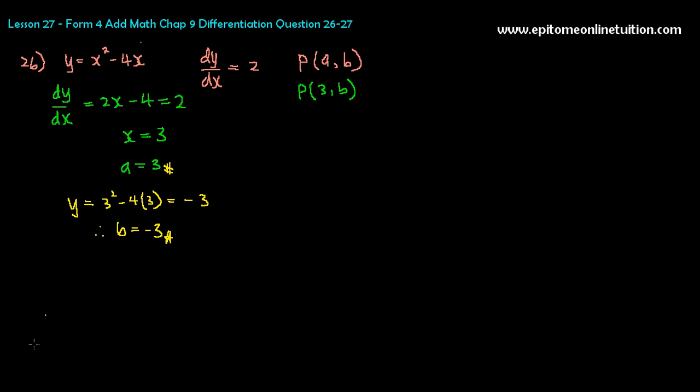Okay, so now you have done 26A. Simple. 26B. So find the equation of the tangent to the curve at P. So now that you have found point P, point P is actually (3, -3), the coordinates. So now that you have the coordinates of point P, you can easily find the equation of tangent. What was the gradient? The gradient is 2 and it passes through a point (3, -3).